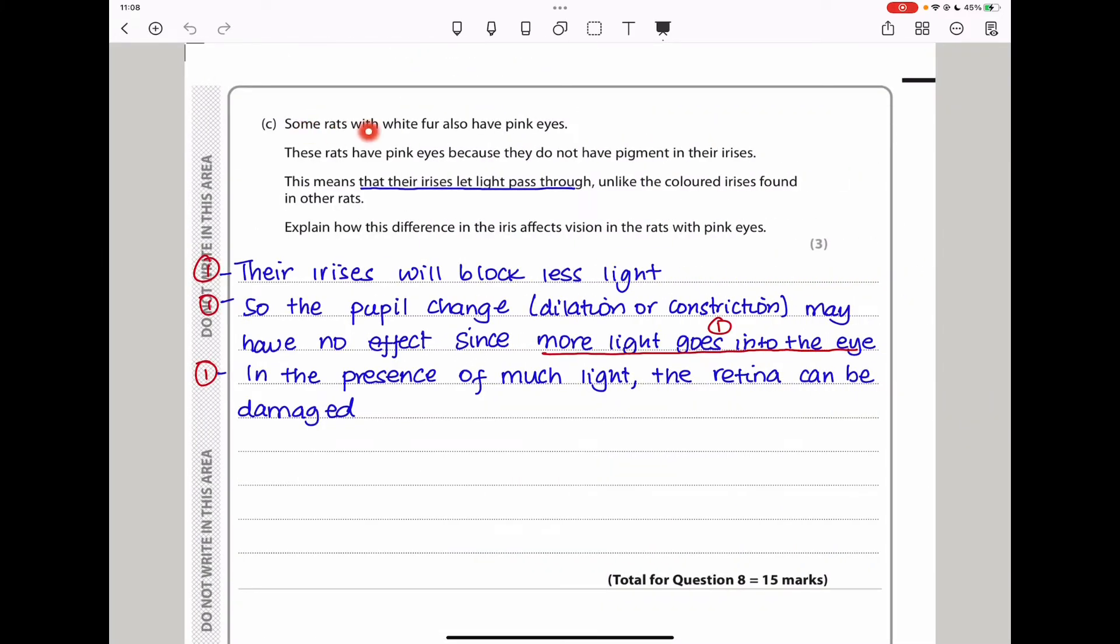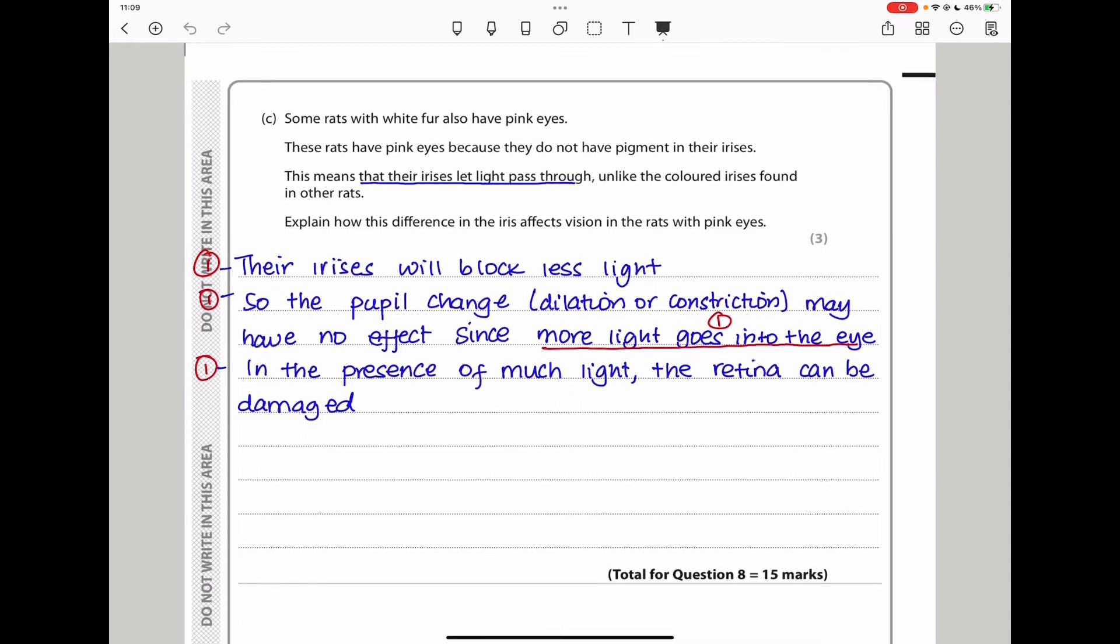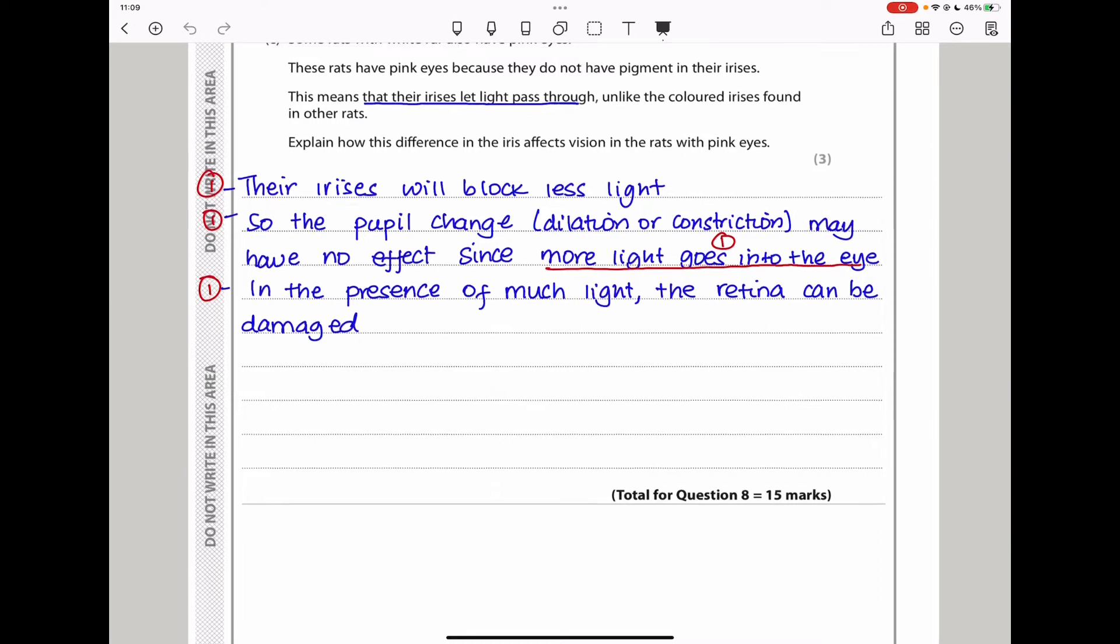Here they say some rats with white fur also have pink eyes. These rats have pink eyes because they do not have pigment in their irises. This means that their irises let light pass through, unlike the colored irises formed in other rats. Explain how this difference in the iris affects vision of the rat with pink eyes. If their irises will not block less light, meaning they allow more light to go through, it means the change or dilation or constriction of the pupil will have no significant effect. In the end, more light will still go into the eye. And if it goes to the retina, it could damage the light-sensitive cells. That means there is going to be failure or vision is going to be affected. So these rats may not be able to see properly because much light entered into their eyes and it damaged the photosensitive cells, the ones you call the rods and cones.